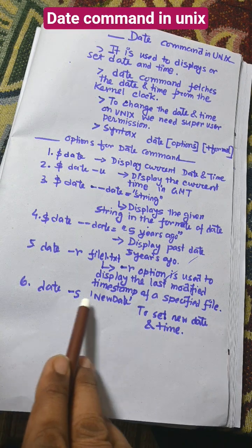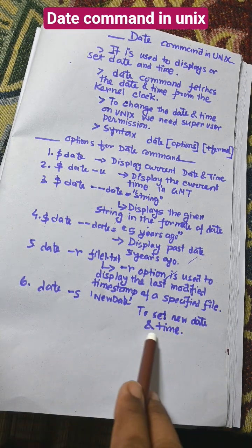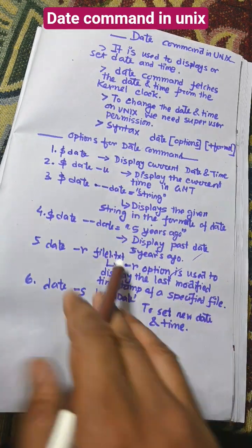date -s is used to set the new date and time. So these are the different options of the date command.